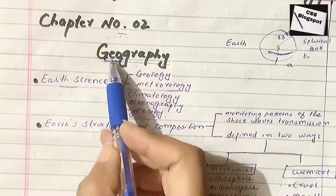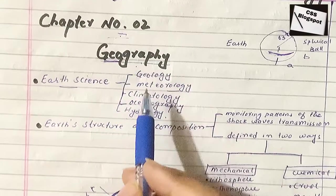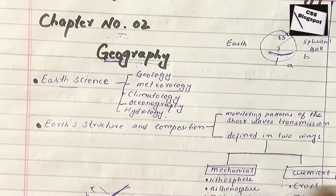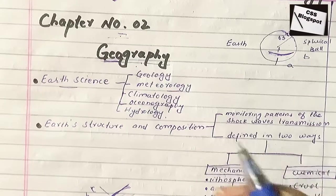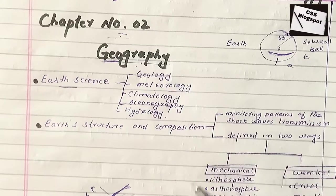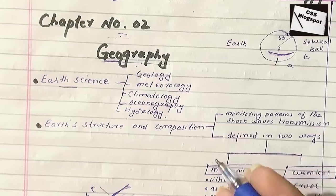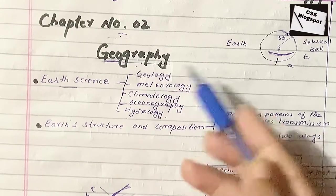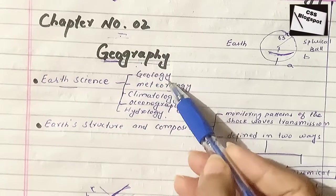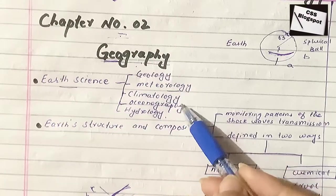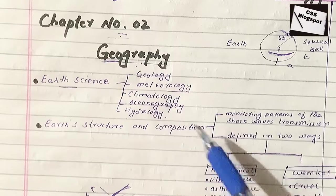Now without any delay, let's start our lecture. As the name indicates, geo stands for earth, so geography is that science that deals with the description, distribution, and interaction of the various features of earth's surface. It is an earth science and it includes geology, meteorology, climatology, oceanography, and hydrology.